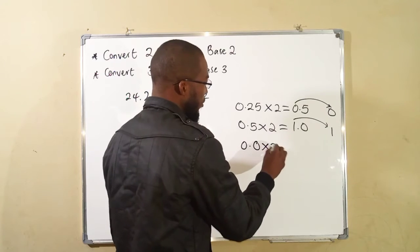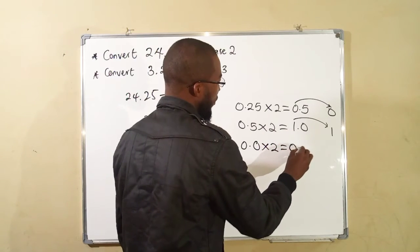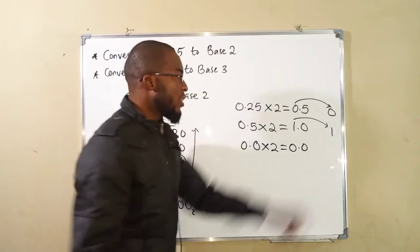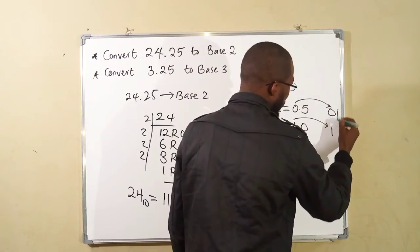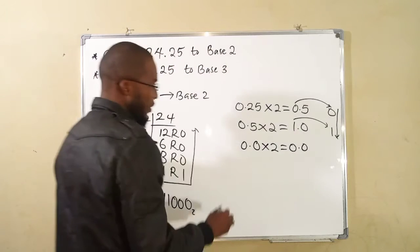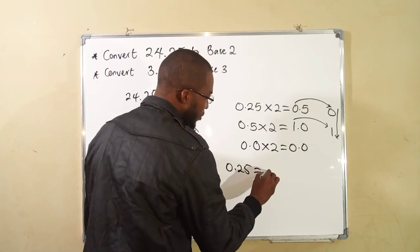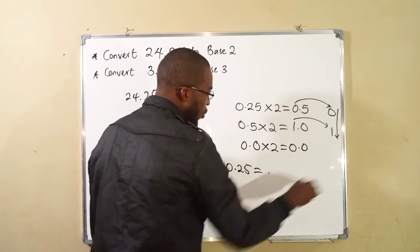So even if you times it by 2, you shall obtain 0.0. So you stop here. So these numbers, we are going to take them from the top to the bottom. We conclude by saying 0.25 is the same thing as 0.01.